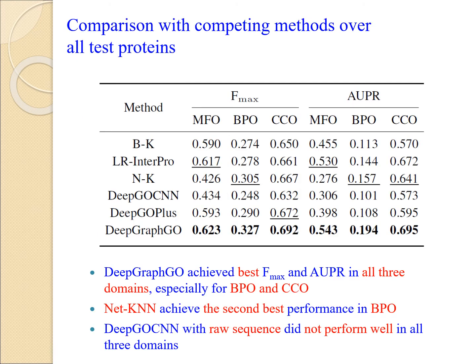This table shows the performance comparison of DeepGraphGO and all competing methods, including BlastKNN, LRInterpro, NetKNN, DeepGOCNN, and DeepGOPlus. DeepGraphGO achieved the best performance in both Fmax and AUPR in all three GO domains, especially for BPO and CCO. NetKNN achieved the second-best performance in BPO, consistent with the widely accepted hypothesis that proteins interacting in the same network tend to participate in the same biological process. Note that the sequence-based deep learning method DeepGOCNN did not perform well in all three GO domains, indicating that encoding protein sequences by a simple one-dimensional convolutional neural network is insufficient to capture the most helpful information for AFP.